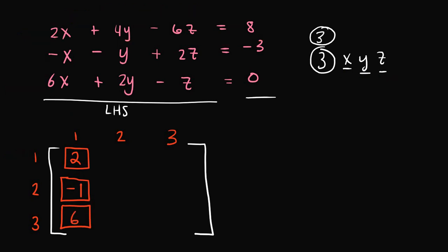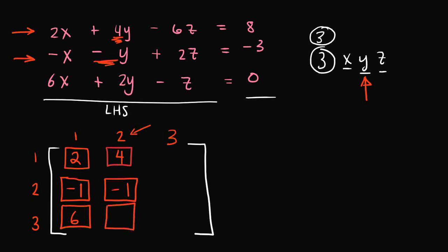Moving on to element (1,2): 1 corresponds to equation 1, and 2 corresponds to the unknown variable y. In the first equation, the coefficient for the y term is 4. For the (2,2) element, 2 corresponds to the second equation and the y term coefficient, which is negative 1. For the (3,2) term, 3 corresponds to the third equation and 2 corresponds to the unknown variable y, so the coefficient for the y term in equation 3 is 2.